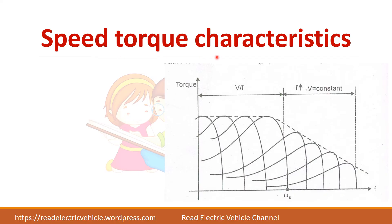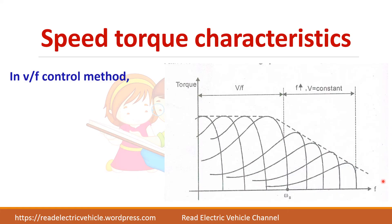Looking at the speed-torque characteristics: up to base frequency, the V by F ratio is maintained constant, so maximum torque also remains constant. After base frequency, frequency is increased with voltage held constant, causing torque to decrease. So torque will decrease after base frequency.